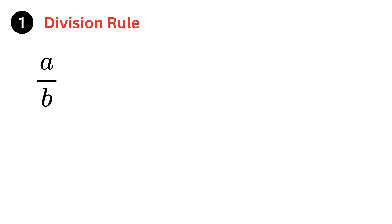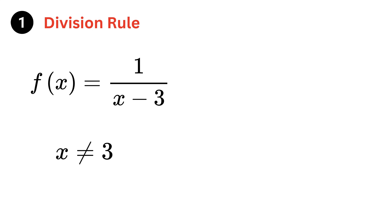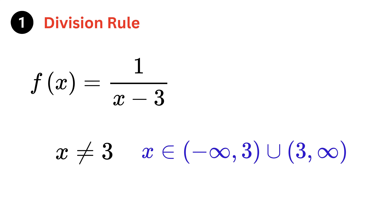First, any time a variable is in the denominator, you must make sure it never becomes zero, because division by zero is undefined. Take a function like f(x) = 1 divided by (x minus 3). Here, x minus 3 is in the denominator, so we must avoid x equals 3. Hence the domain is all real numbers except 3, written as negative infinity to 3, union 3 to positive infinity.